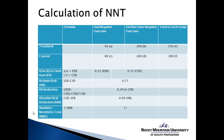The relative risk reduction is calculated by taking the EER, subtracting the CER, dividing that result by the CER, and multiplying by 100. This gives us a relative risk reduction of 0.29, or 29%, telling us that the treatment appears to reduce the risk of the negative outcome by about 29%.